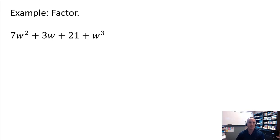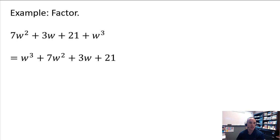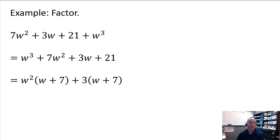In the next example, the polynomial is not in descending order, so we rewrite it first. From the first two terms, we have a w squared in common, and from the last two terms, we have a positive 3 in common. We factor out w squared, leaving behind w plus 7, and factor out positive 3, also leaving w plus 7. Now we factor out the common w plus 7 from each group, and that's it.